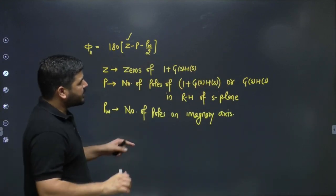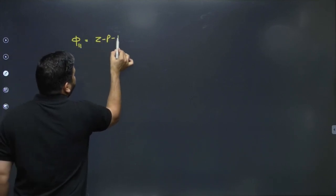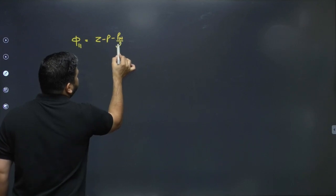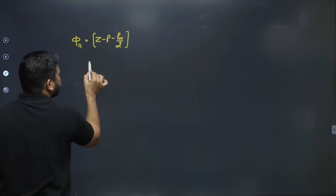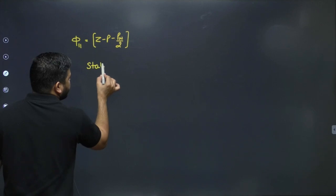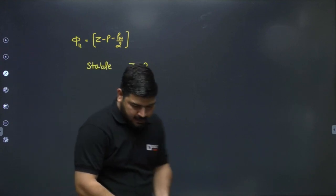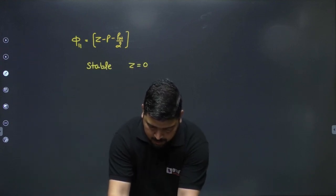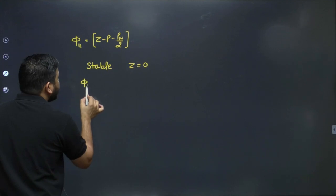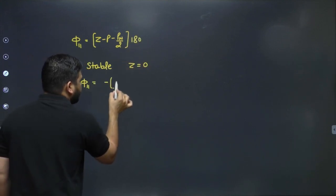511 equals Z − P − PW/2. For a stable system, Z must be zero — meaning no closed-loop poles in the right half of the s-plane. This means 511 must equal −(P + PW/2) × 180, which is a negative value.